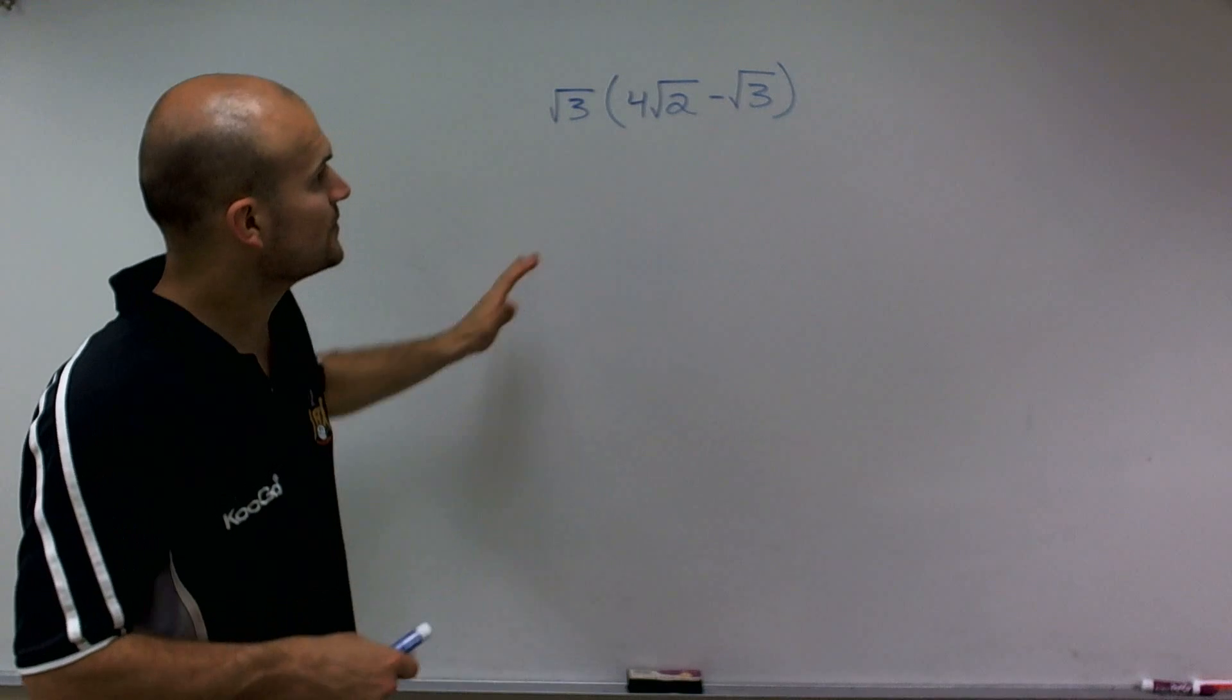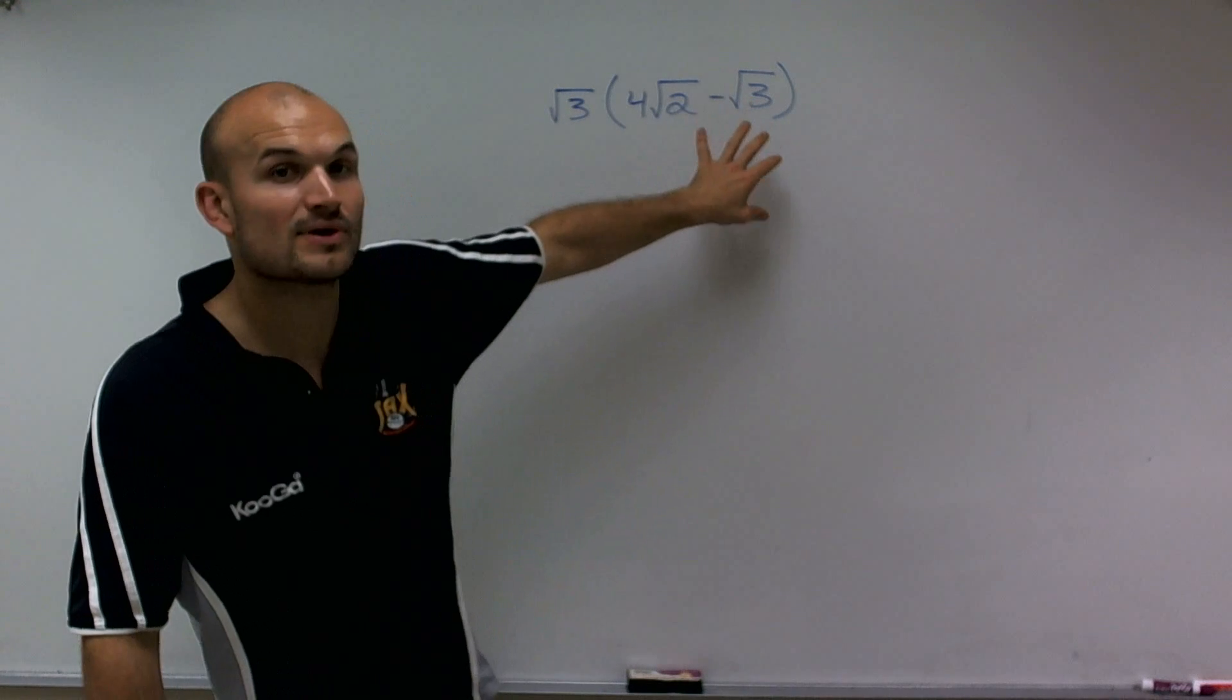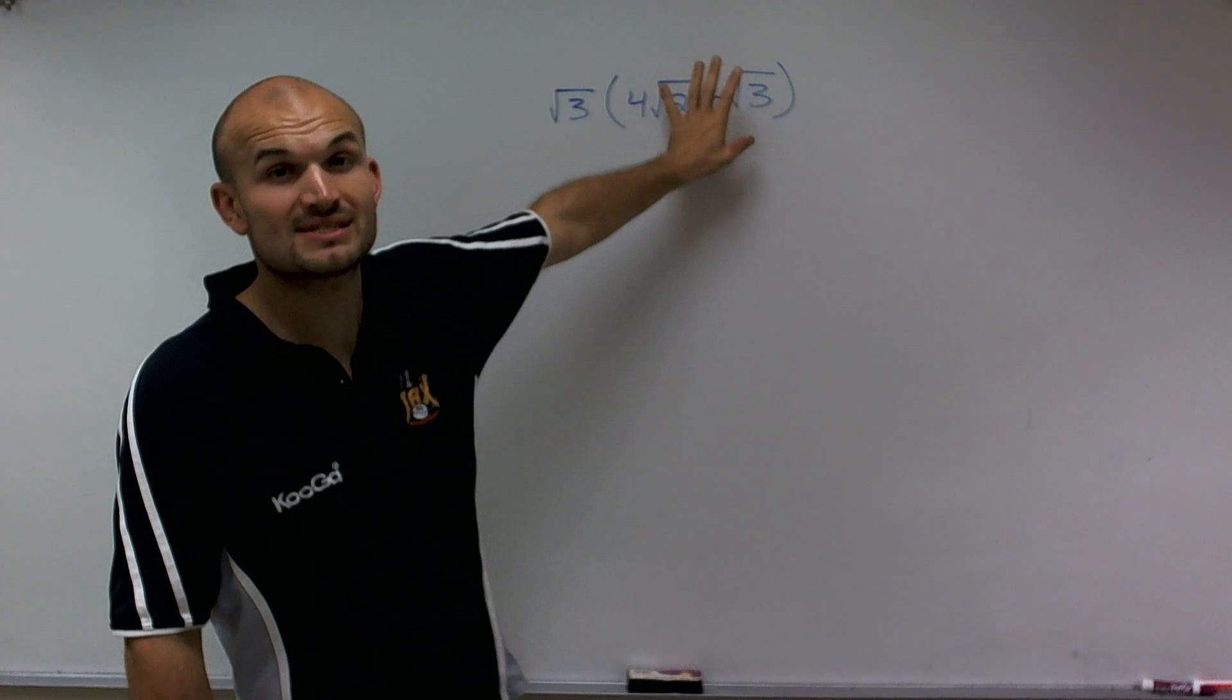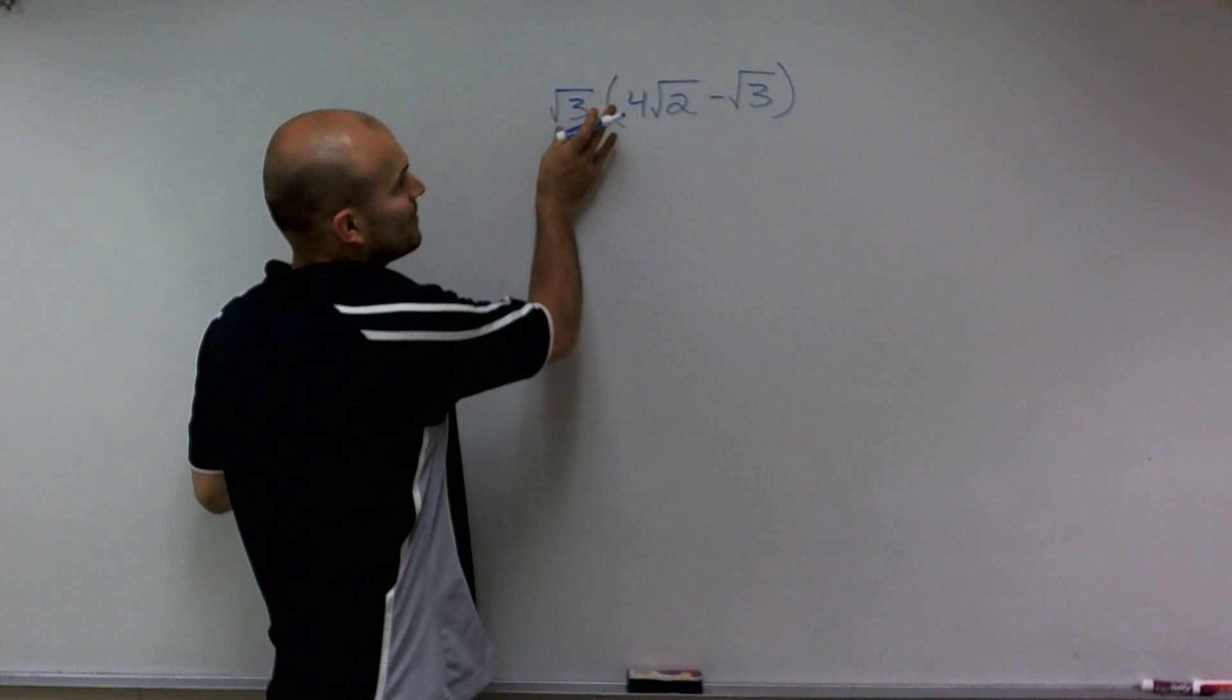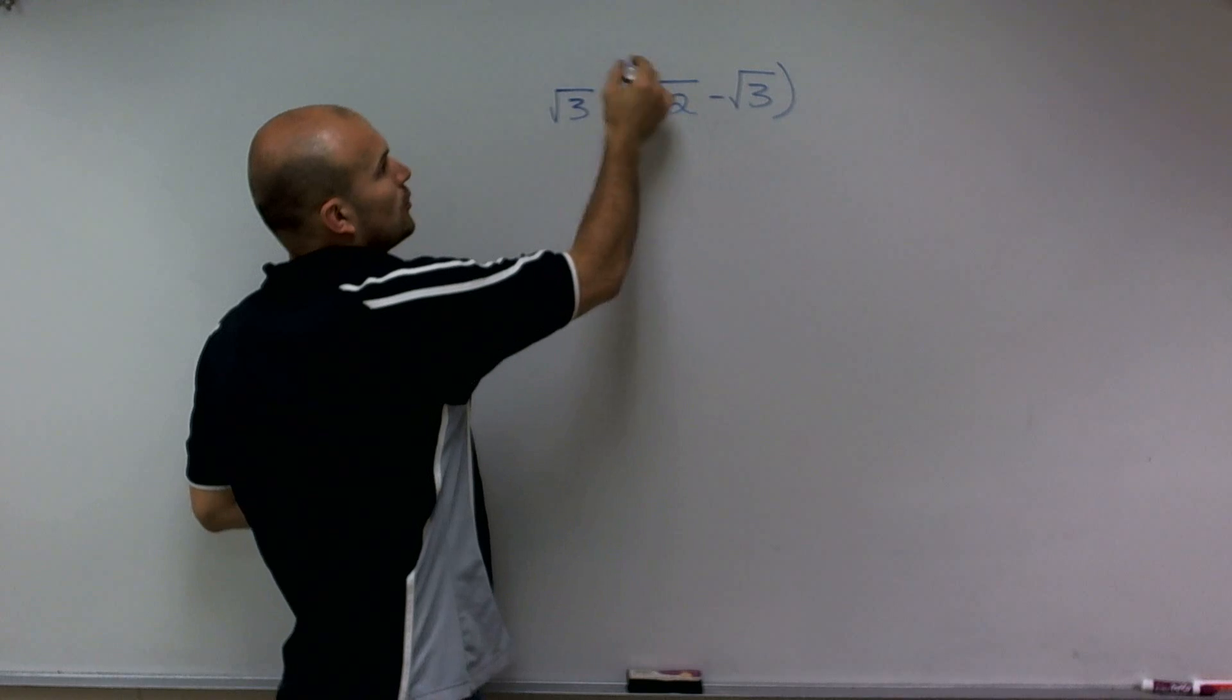Now it's really important that inside this parentheses, since I have two terms separated by a subtraction sign, I am multiplying this square root of 3 times both of these terms.